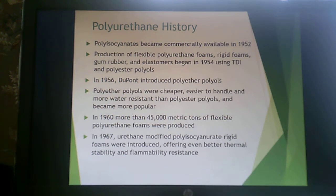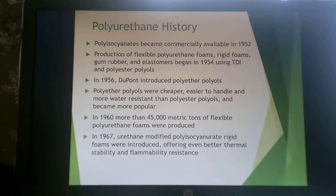It was post-war when polyisocyanates became commercially available in 1952, enabling the production of flexible polyurethane foam, rigid foams, gum rubbers, and elastomers using TDI and polyester polyols in 1954. In 1956, DuPont introduced polyether polyols, which were cheaper, easier to handle, more water-resistant, and had fewer hydrolytic stability issues than polyester polyols.